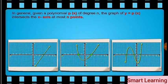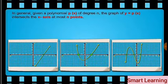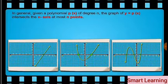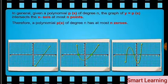In general, given a polynomial p of x of degree n, the graph of y equal to p of x intersects the x-axis at most n points. Therefore, a polynomial p of x of degree n has at most n zeros.